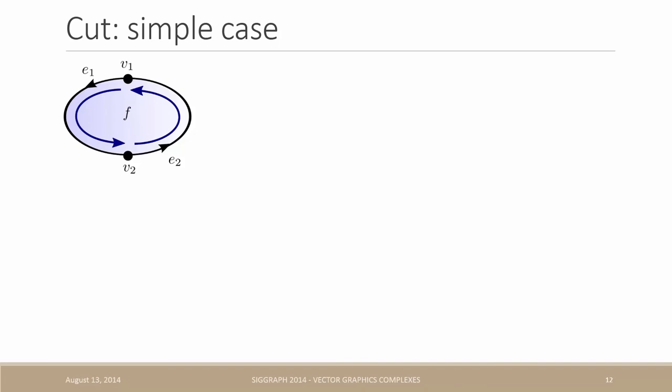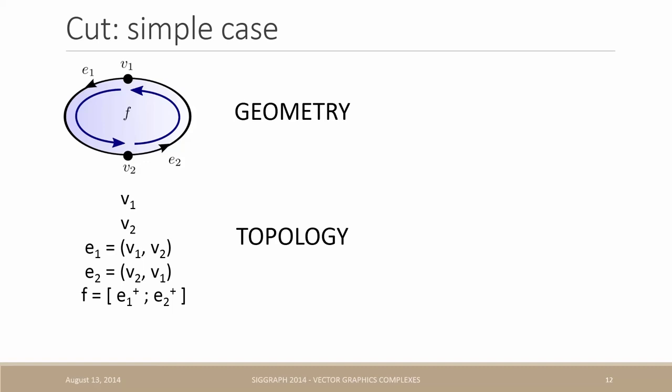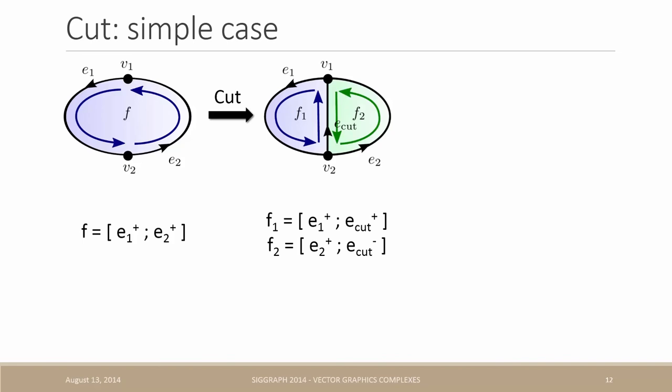So let's consider first a very simple example. Here we have a complex made of a vertex v1, another vertex v2, one edge e1 starting at v1 and ending at v2, and one edge e2 starting at v2 and ending at v1. Finally, we have a face f, made of a unique cycle defined by the two half edges e1 plus and e2 plus. e1 plus is a notation to represent the half edge referring to e1 with the orientation from v1 to v2, so we would use e1 minus for the opposite orientation. The top figure here represents the geometry of the complex, while the bottom represents its topology. For conciseness, let's only focus on the face for now. So the desired result of cutting f is shown here.